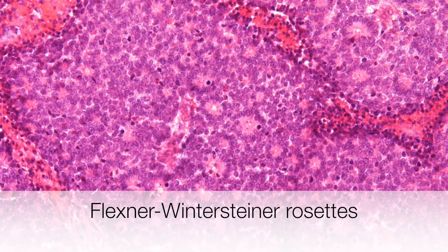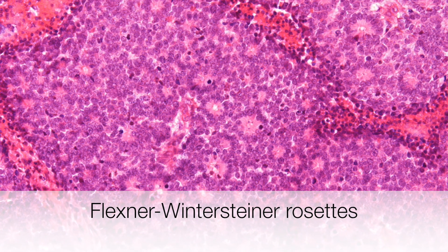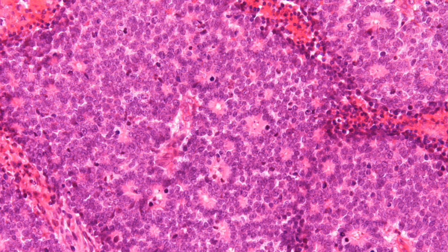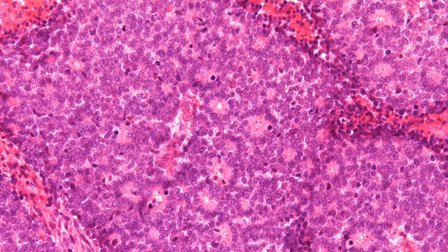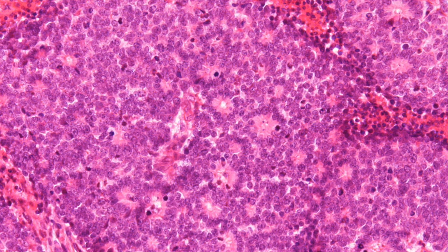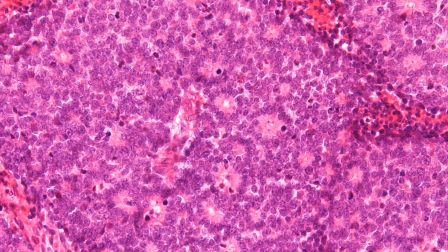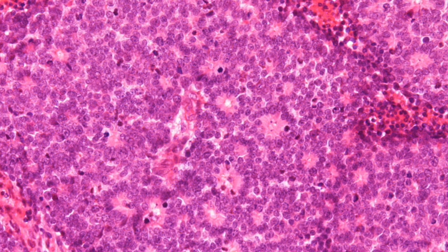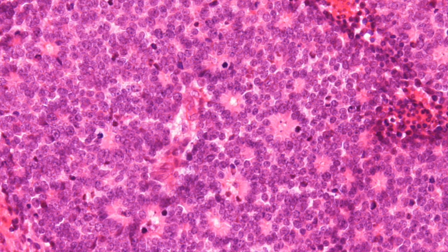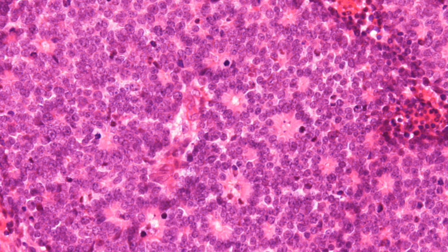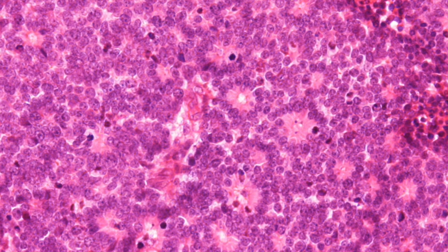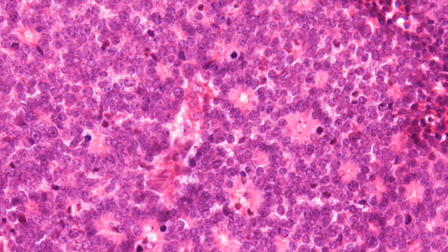In summary, retinoblastomas are malignant intraocular tumours of childhood. 60% are sporadic, where they are usually unilateral and unifocal. 40% are hereditary, where they tend to be bilateral. The vast majority of retinoblastomas are cured.